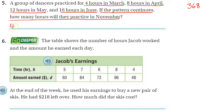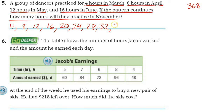So March was 4. March, April, May, June — you can see they're going up by 4. So continuing the pattern: March, April, May, June, July, August, September, October, November — 36 hours.